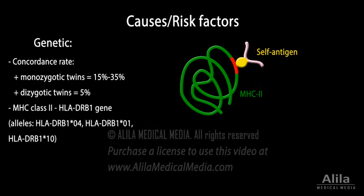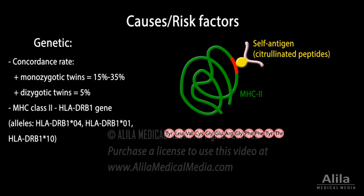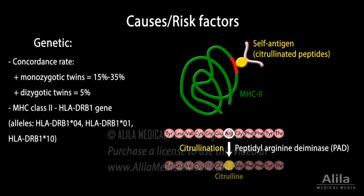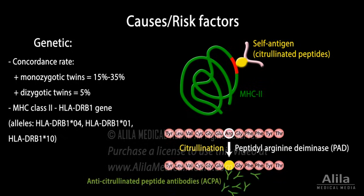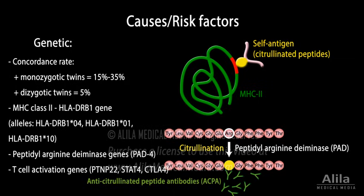The most likely candidates for these self-antigens are citrullinated peptides. Citrullination is a post-translational modification that occurs on the amino acid arginine within a peptide. Citrullination is a normal process, required for normal function of several proteins, and is typically ignored by healthy immune systems. In rheumatoid arthritis, however, an autoimmune response is developed against citrullinated peptides. In fact, anti-citrullinated peptide antibodies can be detected in up to 80% of patients. Other genetic susceptibilities include mutations in peptidyl arginine deaminase, PAD — the enzyme that catalyzes citrullination — and several other genes involved in T cell activation.